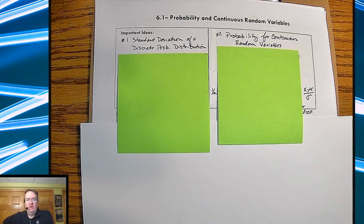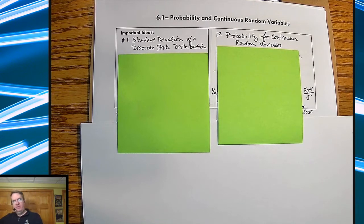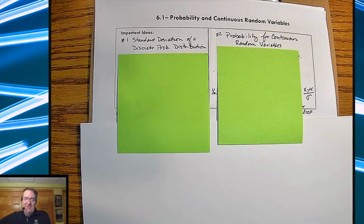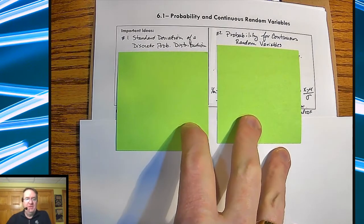Hey everybody, welcome back. Kicking through probability and continuous random variables. This is day two of chapter six of the CED unit four. How about that for a lot of variables and numbers? Anyway, I'm Mr. Hayes. I'm working through the stats medics curriculum. I use it in my classes here at West Chicago.